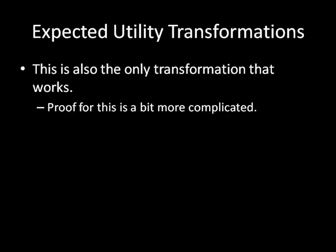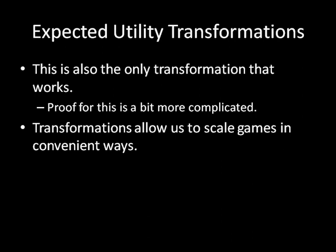A couple more things about expected utility transformations: the form m times EU plus b is the only transformation that works. You can't do complicated things like squaring, taking square roots, or taking logs — none of those work. It has to be a linear transformation where m is a positive number. Transformations allow us to scale games in convenient ways. It's really nice to be able to take your most preferred outcome and set that to a utility of one, and your least preferred outcome to a utility of zero, which will make a lot of algebra easier when we start talking about more complicated matrix games.